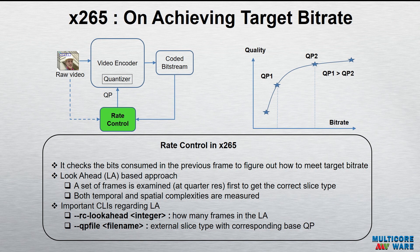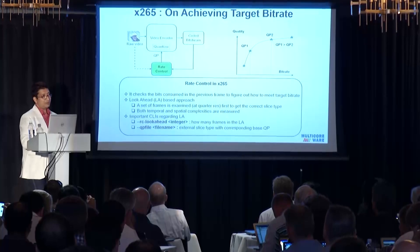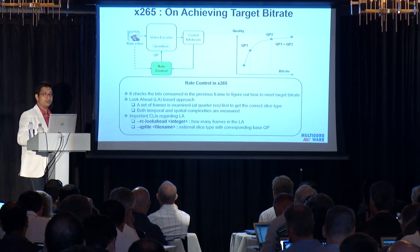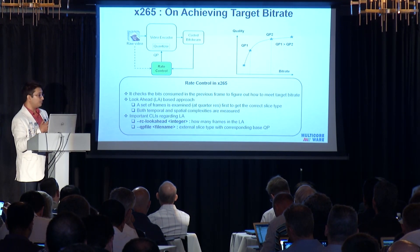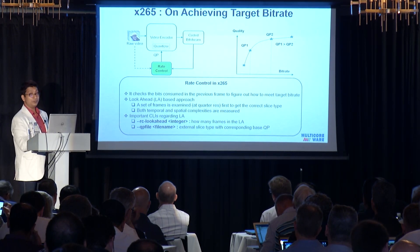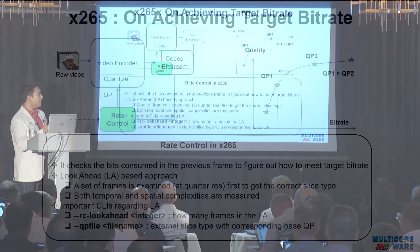Two important spatial CLIs for x265 in this respect are RC look-ahead and the QP file. RC look-ahead lets you change the number of look-ahead frames P — while encoding frame N, what should be frame N plus P. You can change this number using a CLI. Going P to infinity means checking all frames first, which is optimal but not practical. Going for only one or two frames is also not good. Alternatively, if you already know what kind of frames are coming, you can replace the look-ahead with a QP file, where you specify the best QP for each particular frame, and slice types can also be defined there.